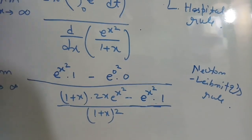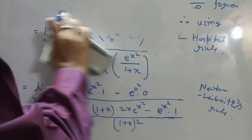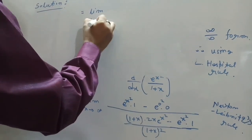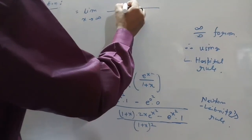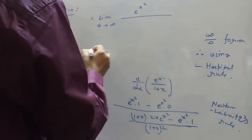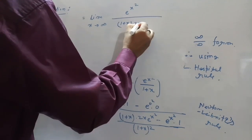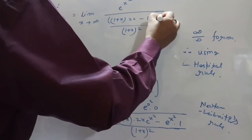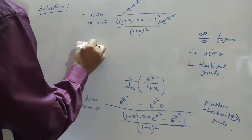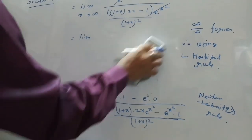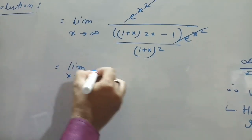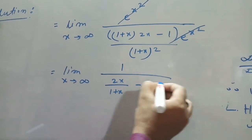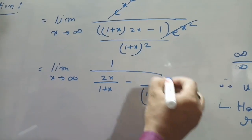This limit reduces to the limit as x tends to infinity of e^(x²) divided by [(1 + x) · 2x − 1] / (1 + x)², with e^(x²) common in the denominator. The e^(x²) terms cancel, leaving the limit as x tends to infinity of 1 divided by [2x/(1 + x) − 1/(1 + x)²].